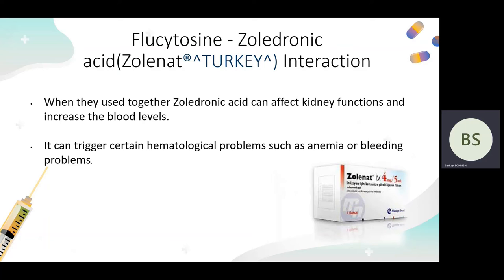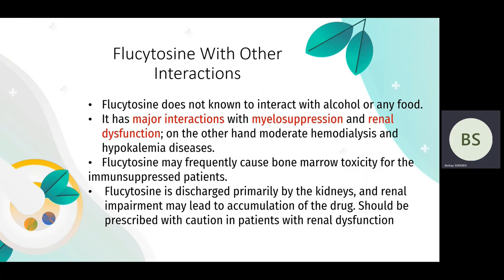The first interaction is flucytosine plus zoledronic acid. When used together, zoledronic acid can affect kidney functions and increase blood levels. It can trigger certain hematological problems such as anemia or bleeding problems.